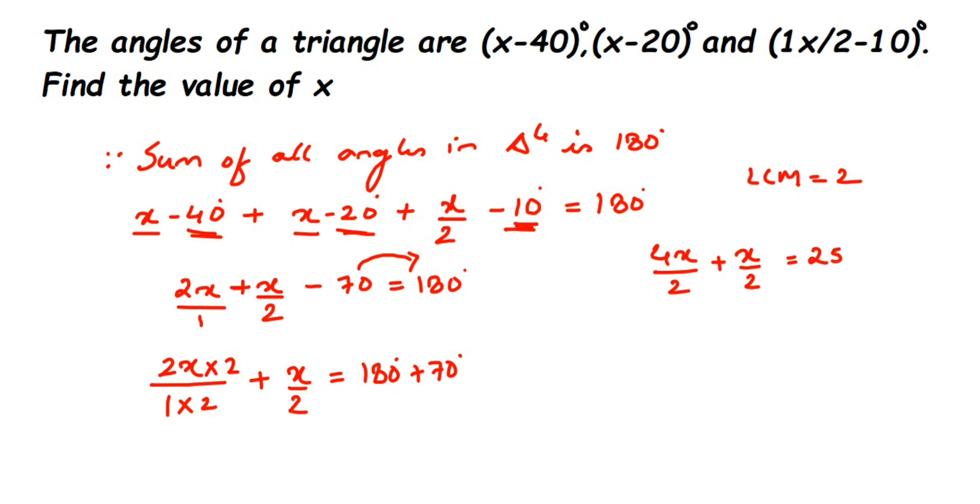On the right side, 180 plus 70 equals 250. Now with the same denominator on the left, we add the numerators. 4x plus x becomes 5x, so 5x/2 = 250.